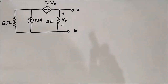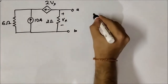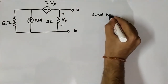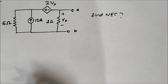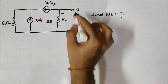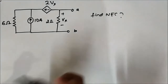Hello, friends. This is the second question related to finding out the Norton equivalent circuit with dependent sources. Here we have a circuit in which we have to find a Norton equivalent across the terminals A and B.